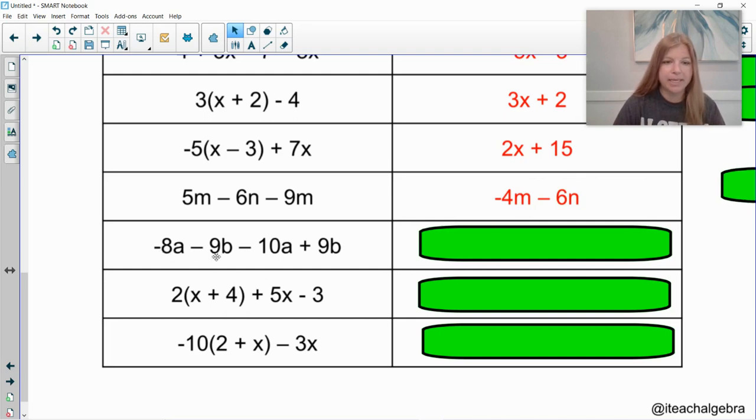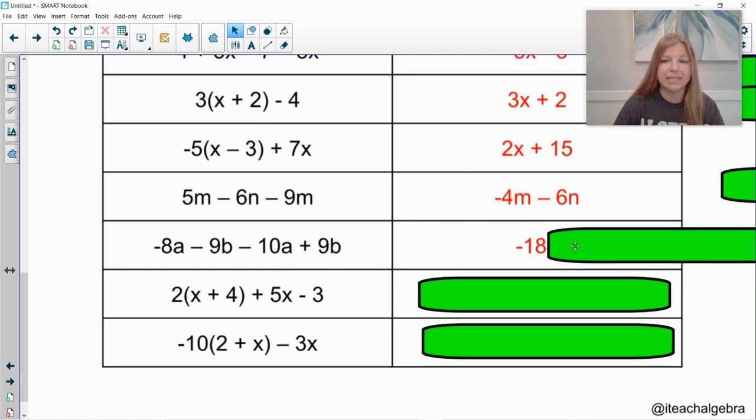Negative 8a minus 9b minus 10a plus 9b. I can combine my a's. So I have a negative 8a and a negative 10a. Those would combine to give me a negative 18a. And then negative 9b plus 9b. Well, what's negative 9 plus 9? It's 0. So I would have 0b. It's not worth it for me to even write 0b because 0 times anything is just 0. And so I don't actually write anything with b at all in my final answer. It's just negative 18a.